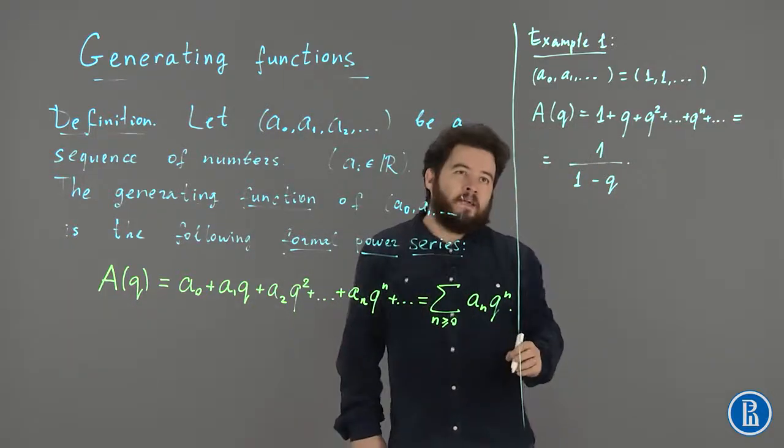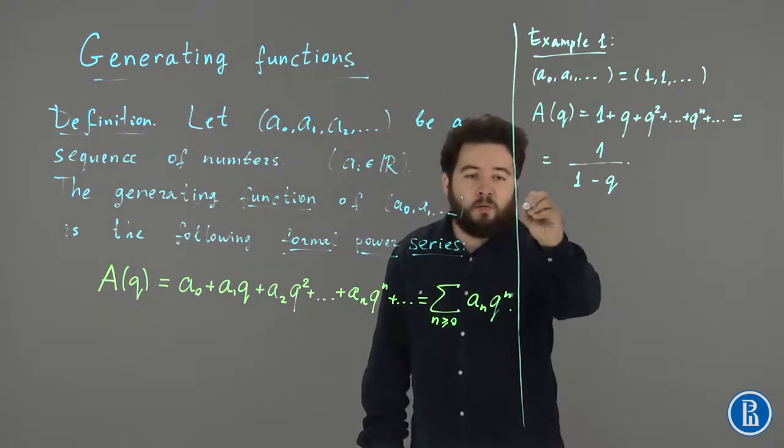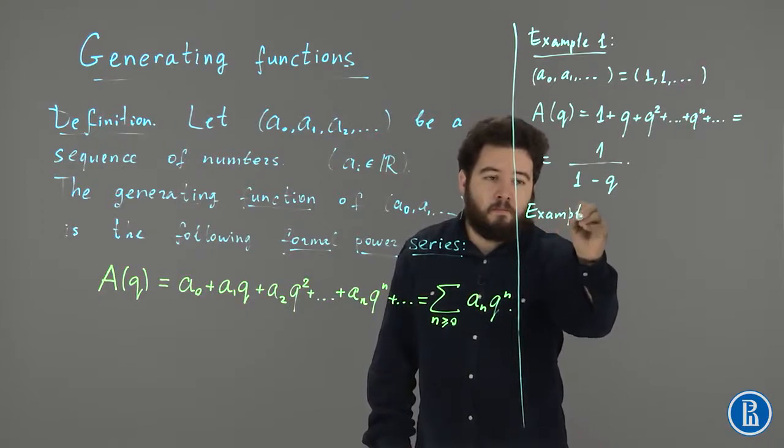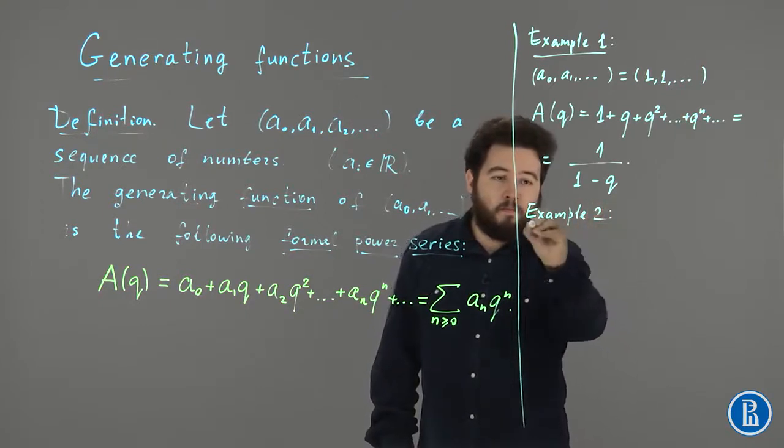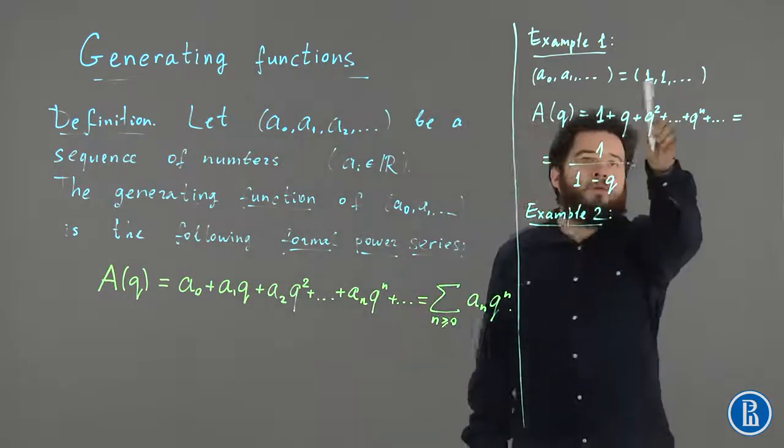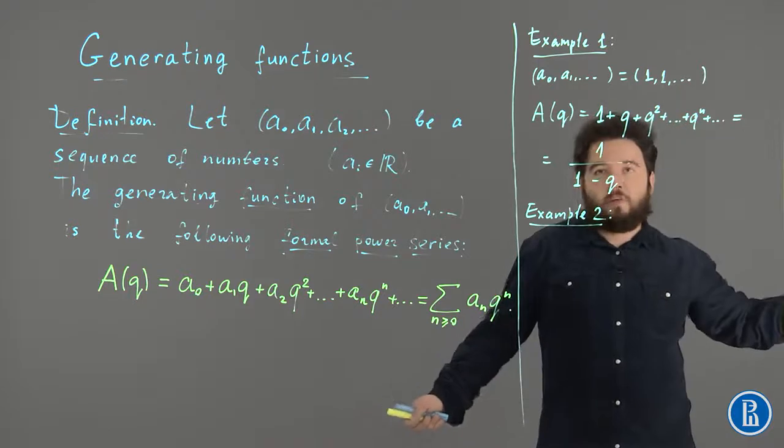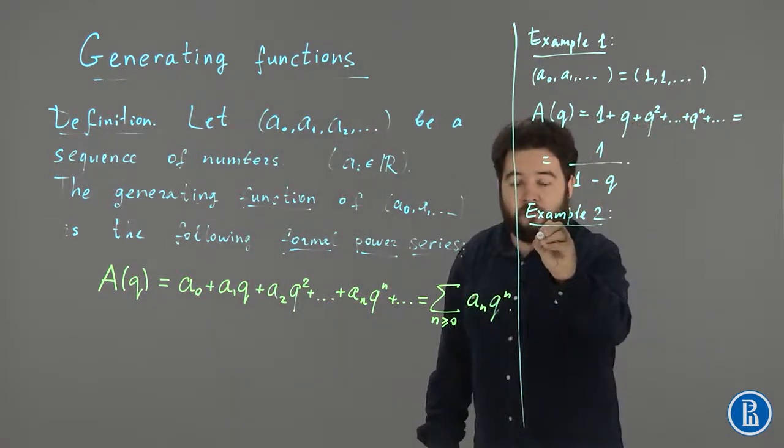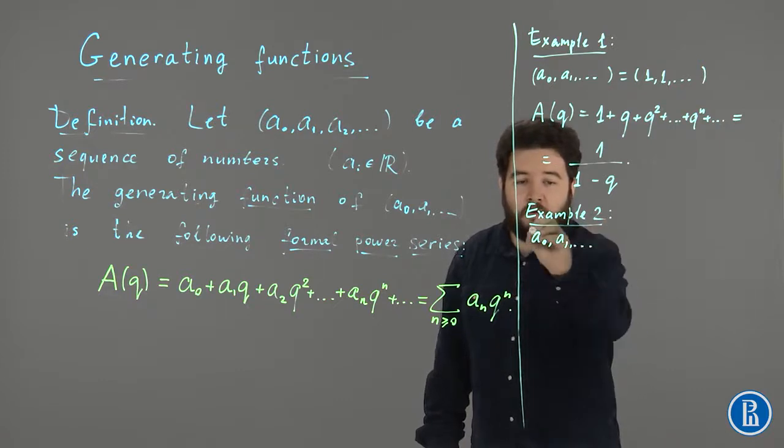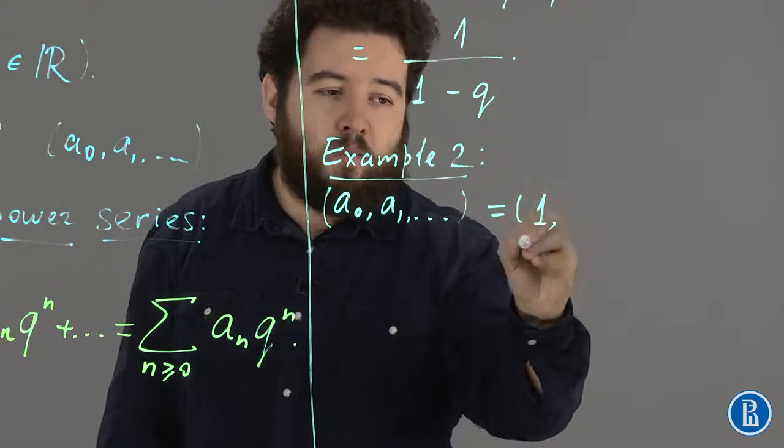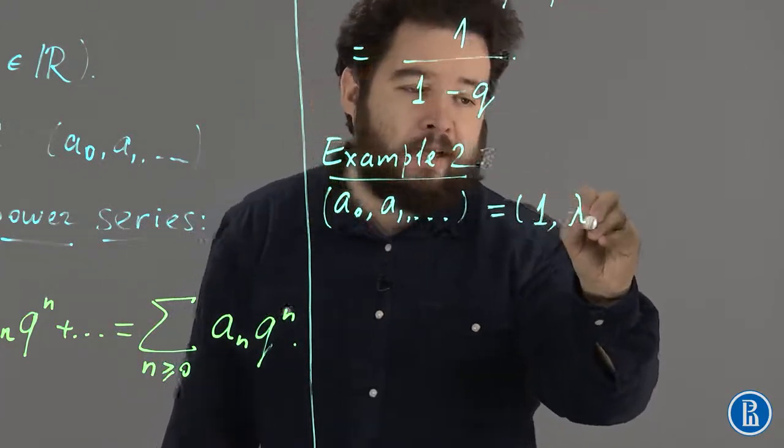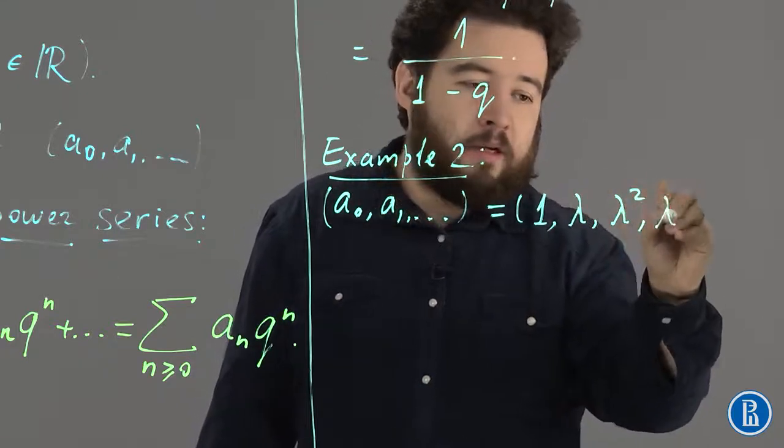Okay, here's another example, a variation of this one. Example 2. What if we start not with a sequence of ones, but just with a geometric progression? So, A0, A1, etc. is a geometric progression with the common ratio, let's say, lambda. Lambda, lambda squared, lambda cubed.